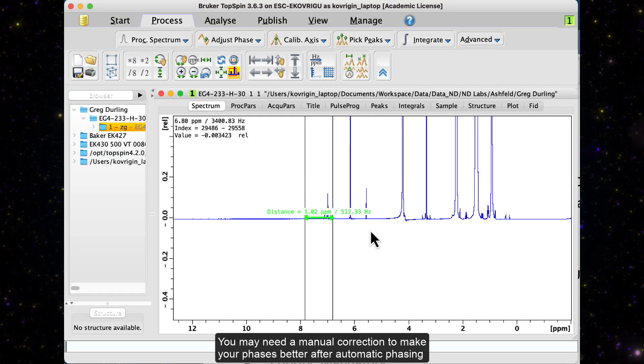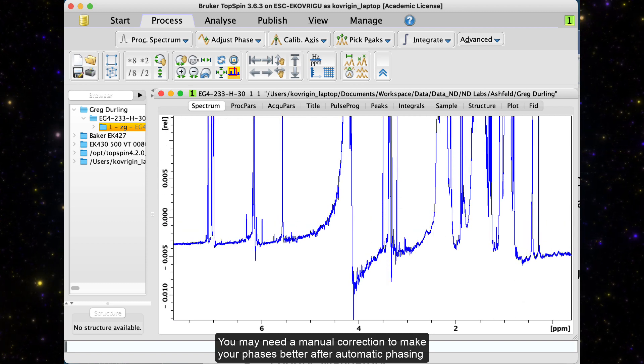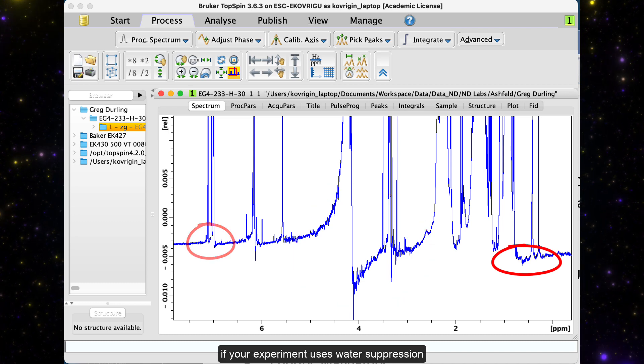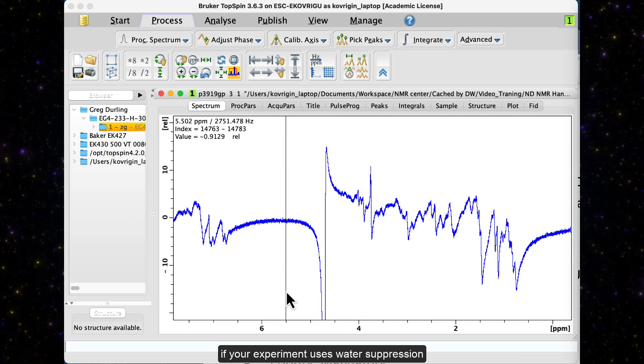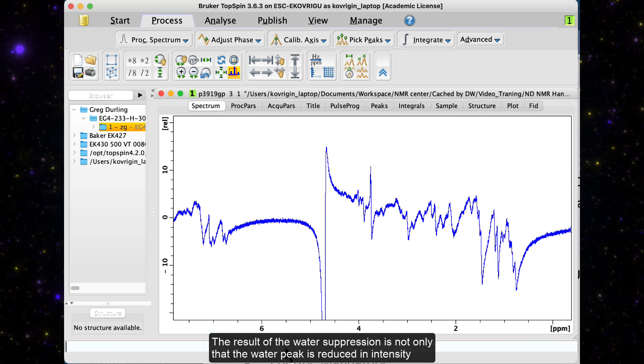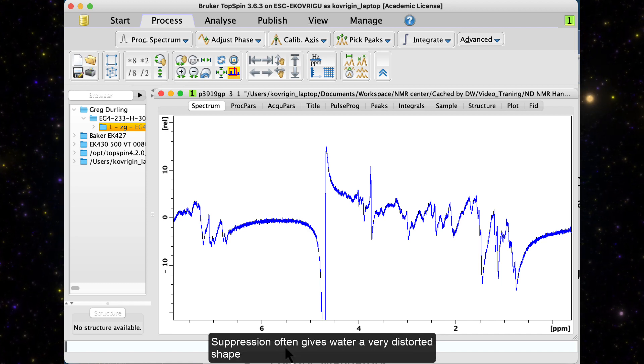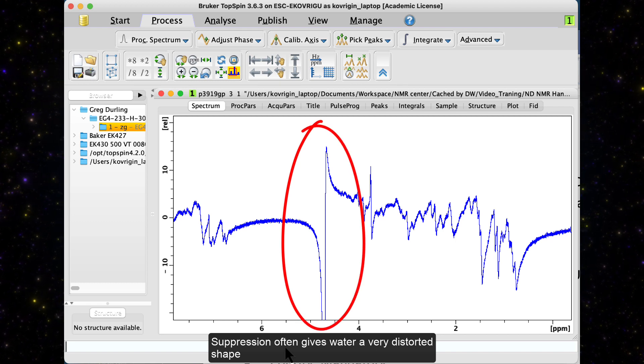You may need a manual correction to make your phases better after automatic phasing, but it becomes particularly important if your experiment uses water suppression. The result of water suppression is not only that the water peak is reduced in intensity. Suppression often gives water a very distorted shape.